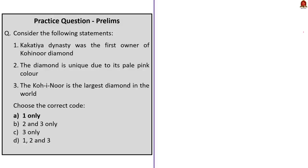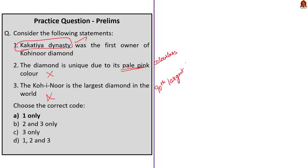Returning to the question: Statement 1 — the Kakatiya dynasty was the first owner of the Kohinoor diamond — is correct. Statement 2 is incorrect because the diamond is colourless, not pale pink. Statement 3 is also incorrect — the Kohinoor is not the largest diamond in the world; it is not even in the top 50 list. The answer is Option A: 1 only.